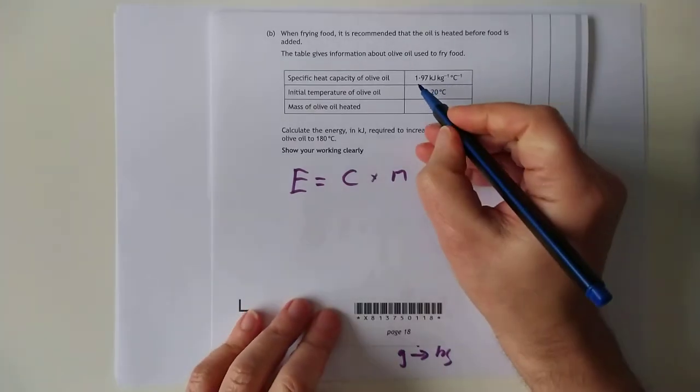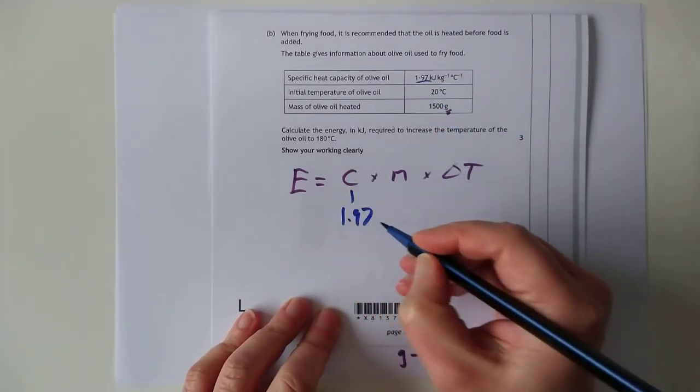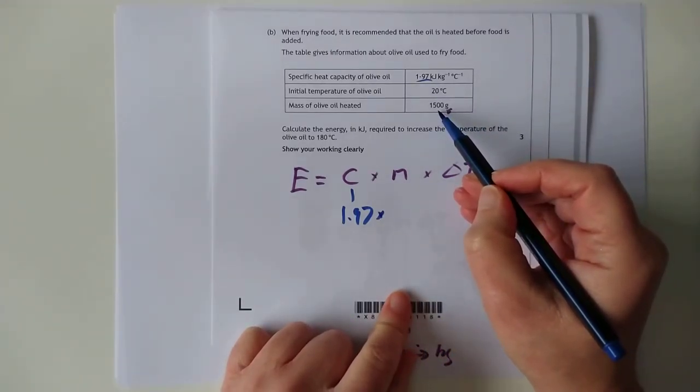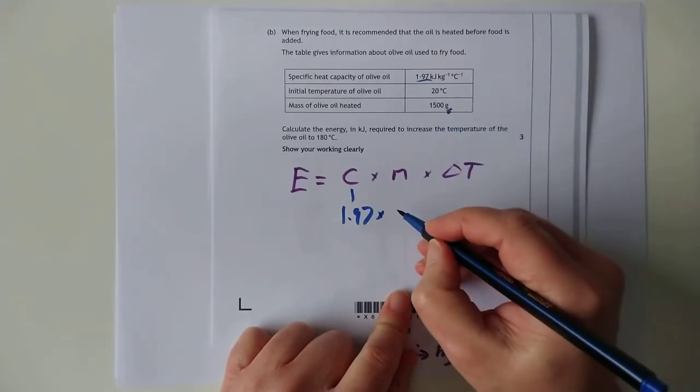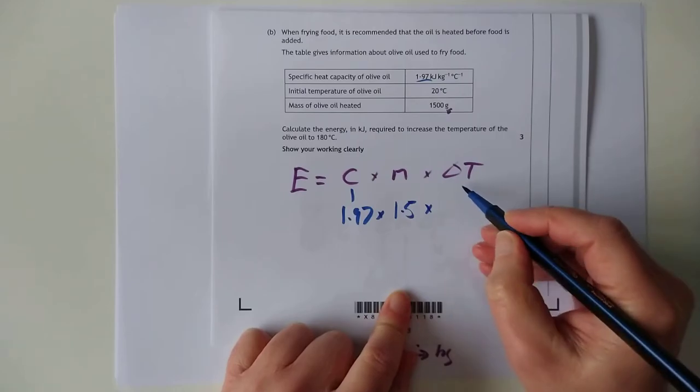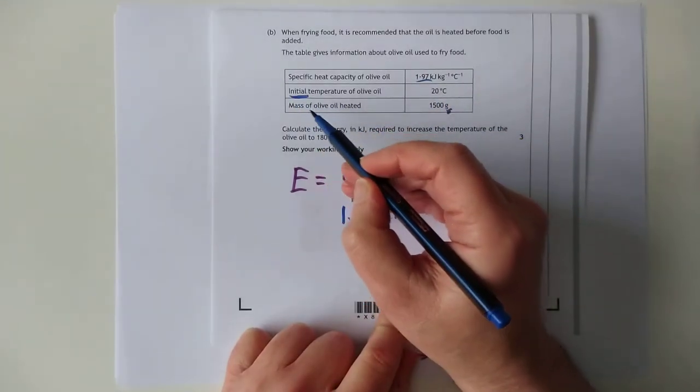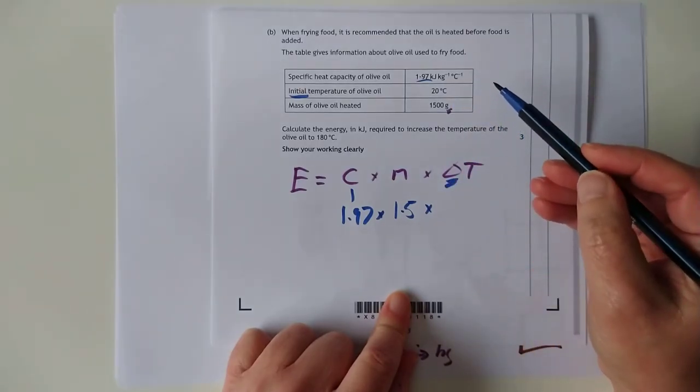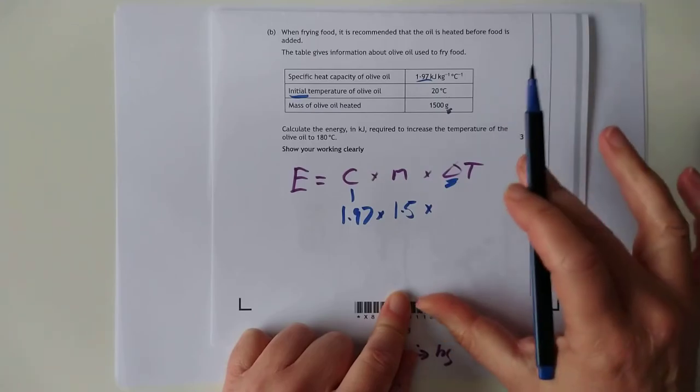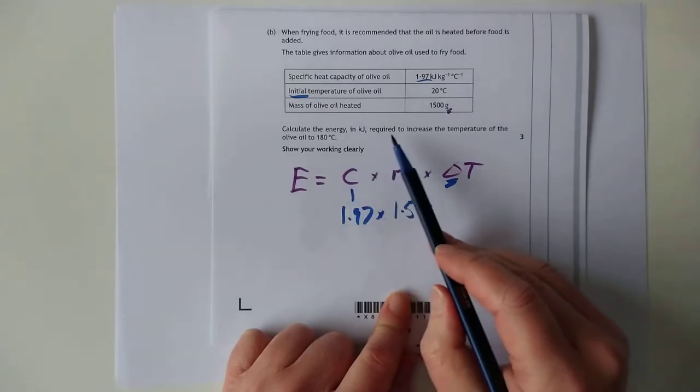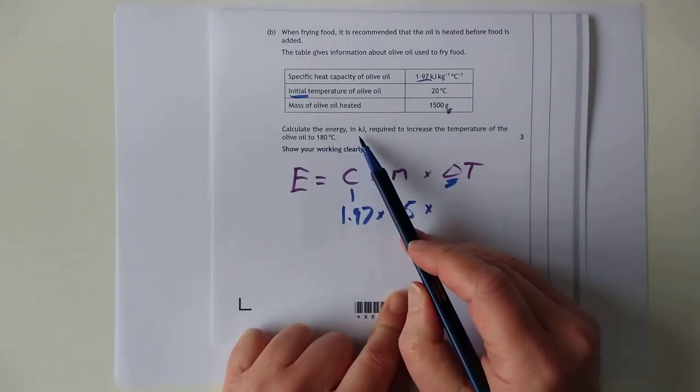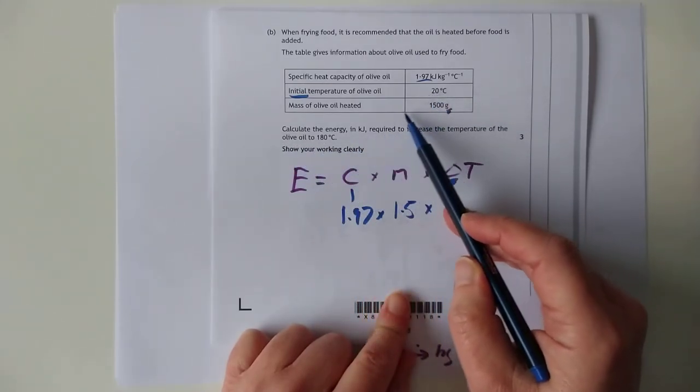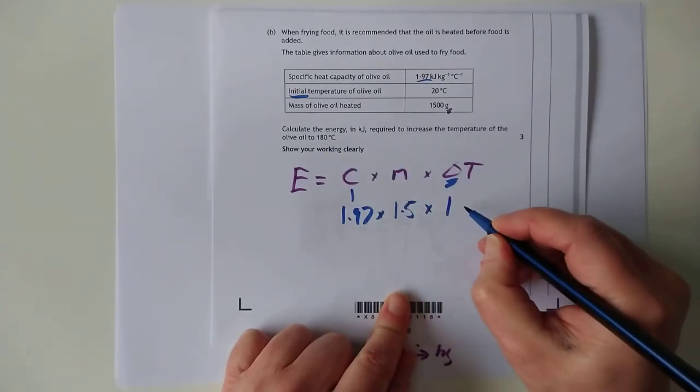Now, the C, as I said, is unusual, because today it's 1.97. The mass of the olive oil that we're heating up is 1,500 grams. So we need to divide by 1,000, you end up with 1.5. And the delta T, the starting temperature, initial temperature is 20. But that's not the delta. Delta means change in. So somewhere else in the question there must be the final temperature, and then we can work out the difference between the two by subtracting them. So calculate the energy required to increase the temperature of the olive oil to 180. So we're going from 20 all the way up to 180, which is a delta of 160.